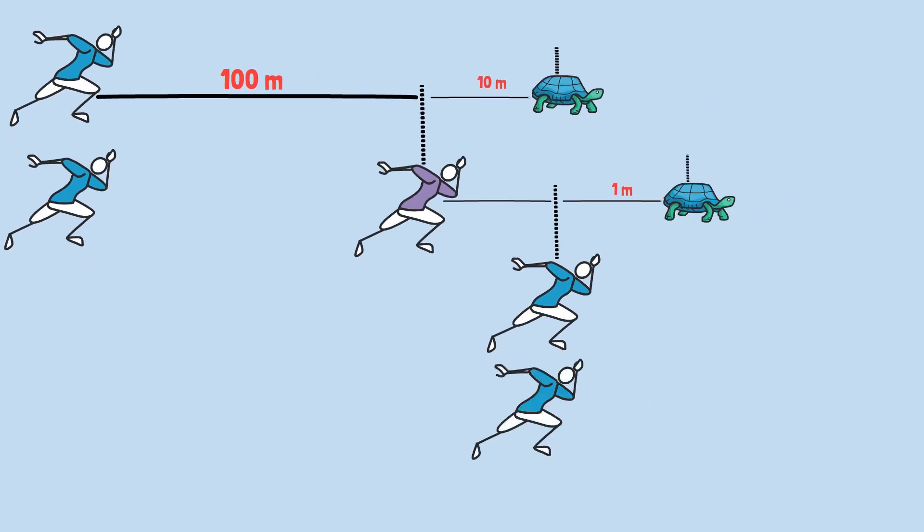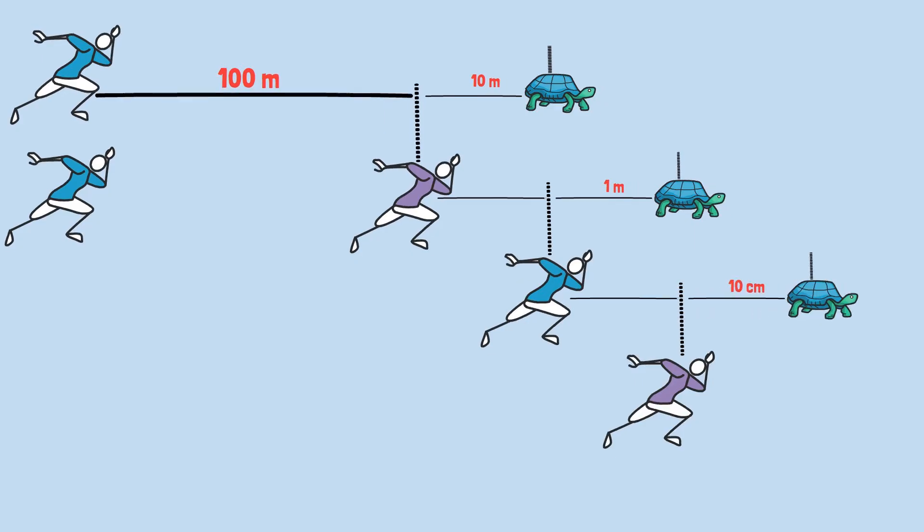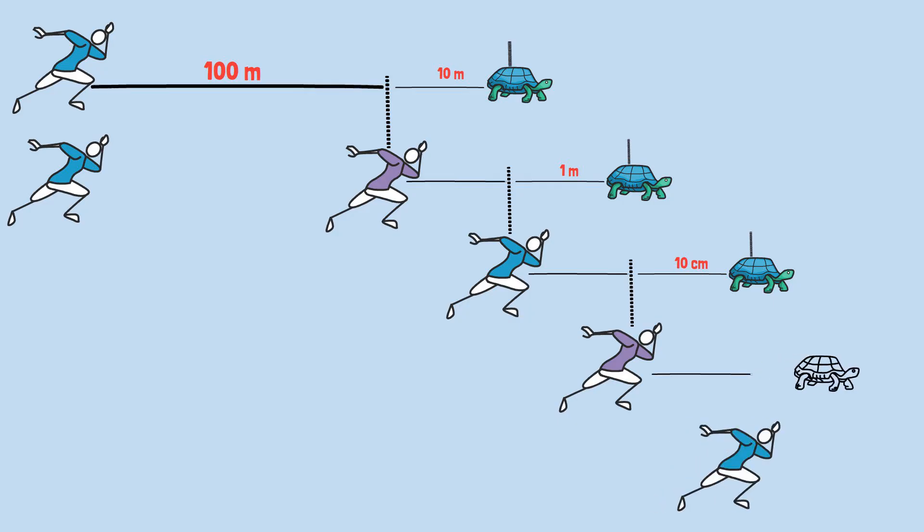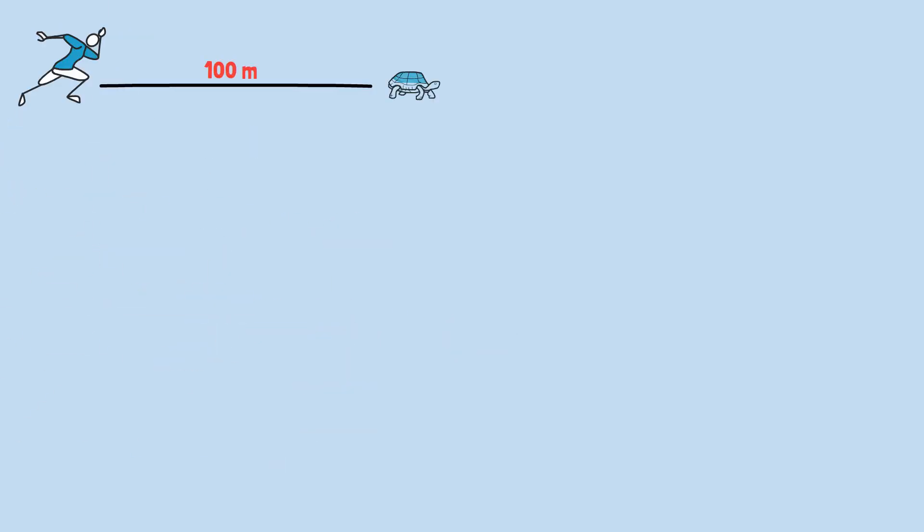Achilles covers that one meter, the tortoise moves another 10 centimeters. Achilles covers those 10 centimeters, the tortoise moves one centimeter, and so on and so on forever. According to this logic, Achilles can never actually catch the tortoise.